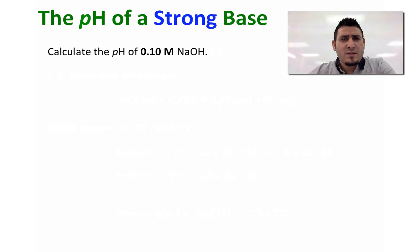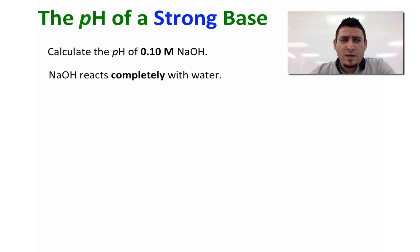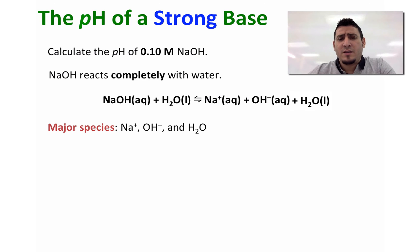Now let's discuss another example: how we can calculate the pH of a 0.10 molar solution of sodium hydroxide. Sodium hydroxide is a strong base and therefore it will completely dissociate in water. The equilibrium is: NaOH + H2O → Na⁺ + OH⁻. The major species in solution are Na⁺, OH⁻, and water.